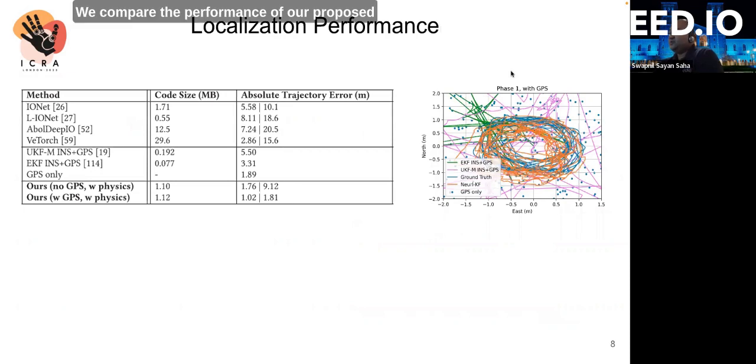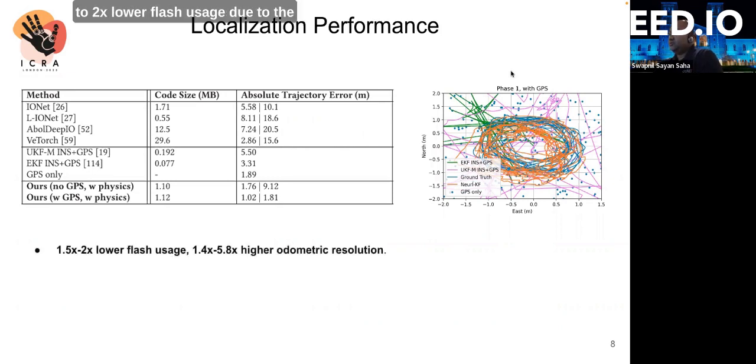We compared the performance of our proposed neural Kalman filter against conventional neural INS as well as classical INS. Across all the baselines, our filter achieves 1.5 to 2x lower FLOPS due to the use of a lightweight temporal convolutional neural network backbone. However, at the same time, our filter achieves 1.4 to 5.8x higher odometric resolution as well.